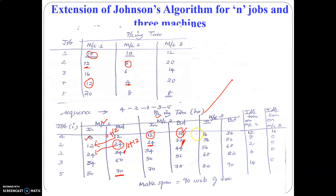Now let us move on to machine 3. Job 4 comes out of machine 2 only at the end of the 16th minute, so machine 3 starts its operation at the start of the 16th minute. Job 4 requires 20 minutes to be processed in machine 3, so 16 plus 20 is 36. Machine 3 is available at the end of the 36th minute. The next job comes at the end of the 32nd minute, so the maximum of these two is 36 minutes, so we write 36.